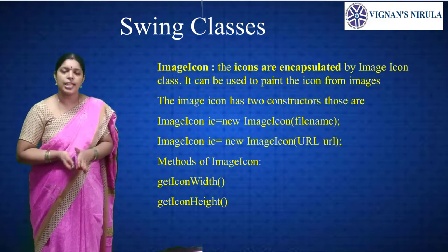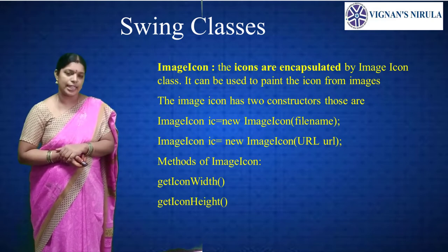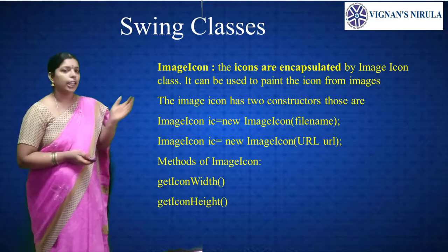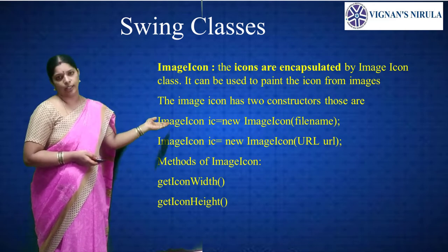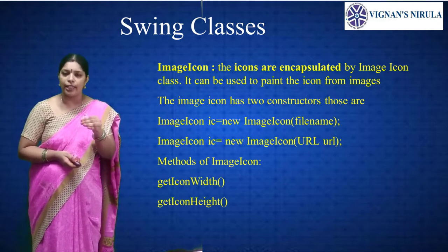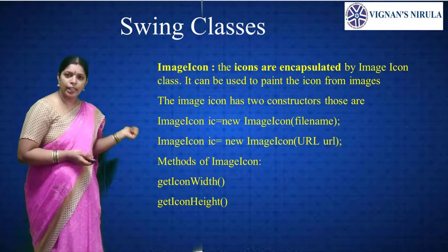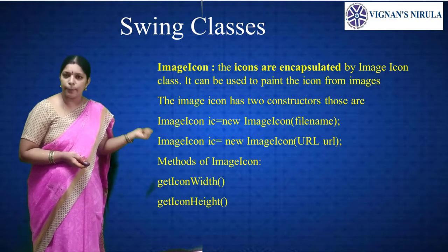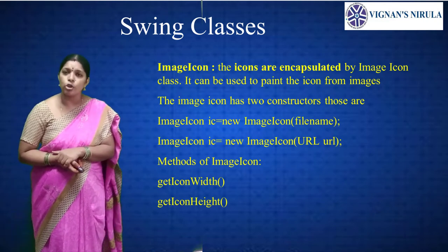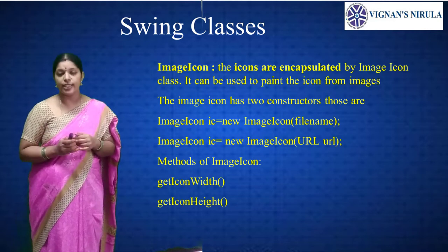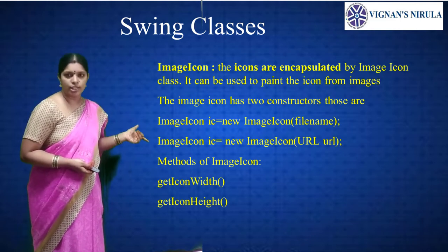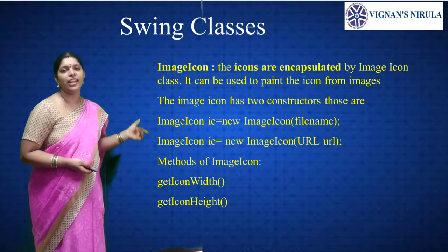The ImageIcon class in swing encapsulates icons and can be used to paint icons from images. ImageIcon has two constructors: ImageIcon with a file name, and ImageIcon with a URL. The file name constructor uses images from the specified file. The URL constructor uses images identified by the URL. ImageIcon can also return the height and width of icons in pixels using getIconHeight and getIconWidth methods.